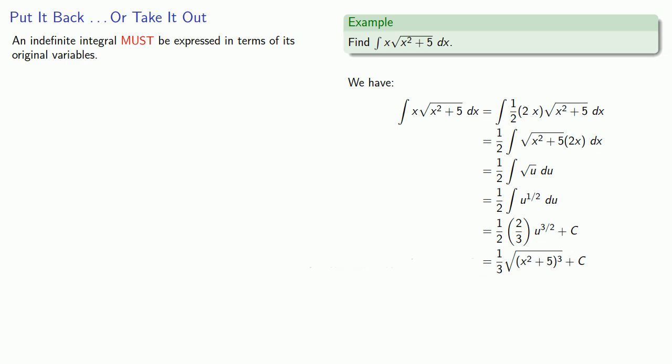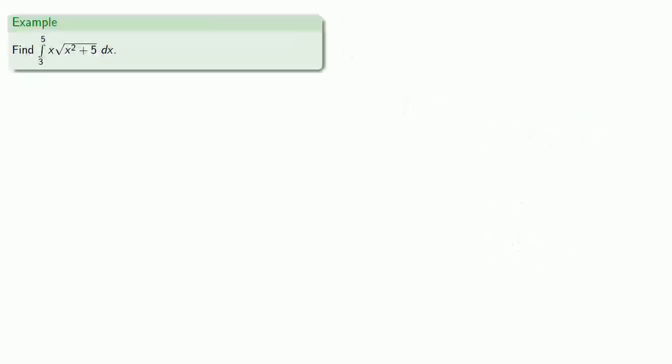But if we have a definite integral, where we have an upper and lower bound, we can re-parameterize in terms of the new variables. What does that mean? Well, suppose I take the same integrand, x square root x squared plus 5, but this time I'm going to find the definite integral from 3 to 5.